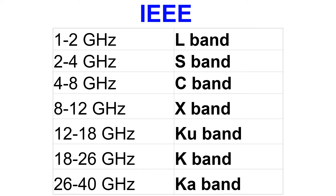Ku stands for K-under, as it is the lower part of an original K band which was split into three. IEEE K band is from 18 to 26 GHz, while Ka band is from 26 to 40 GHz.